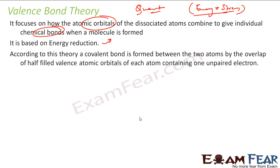According to this theory, the covalent bond is formed between two atoms by the overlap of half-filled valence atomic orbitals of each atom having unpaired electrons. Please note, I will repeat this statement. It is a very critical line here. The covalent bond is formed between two atoms by overlap of half-filled valence atomic orbitals of each atom containing one unpaired electron.